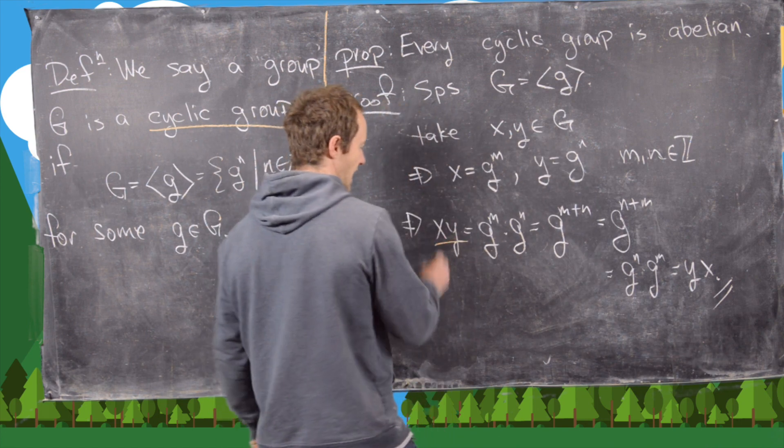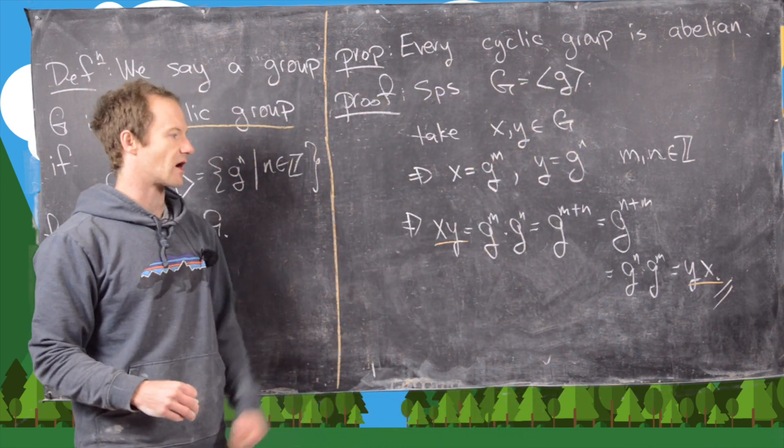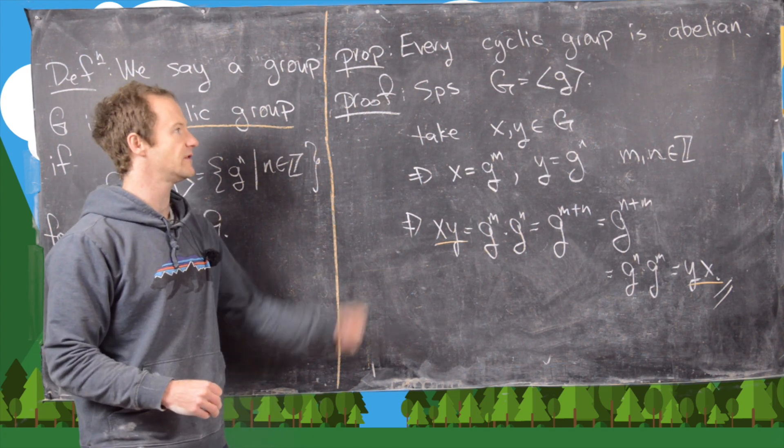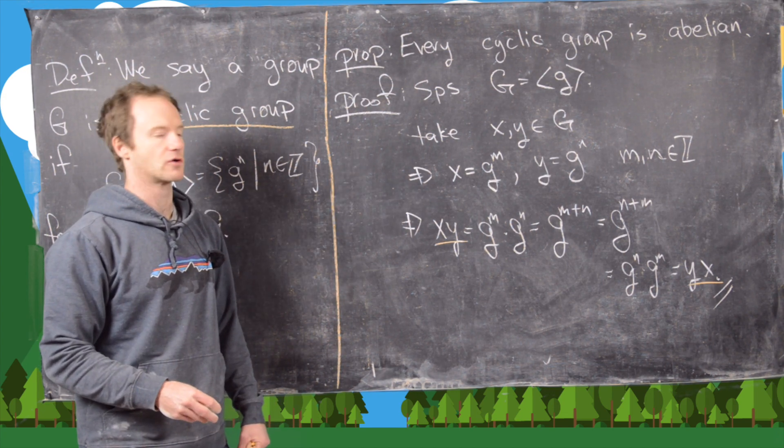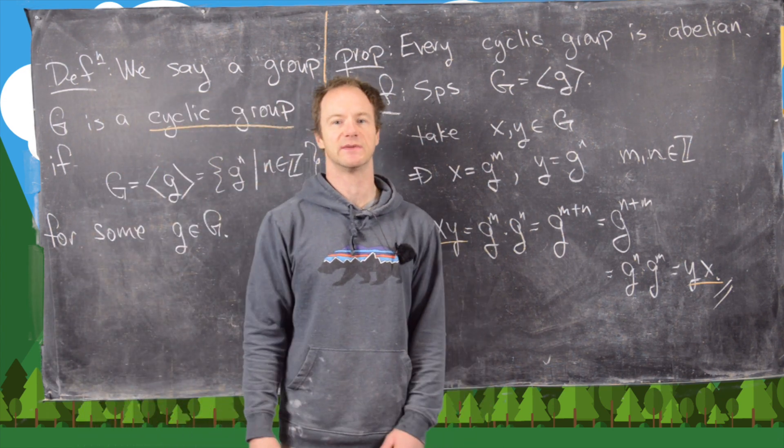So look at what we have: we have x times y equals y times x. In other words, our group operation is commutative, which is exactly what we need to show that our group is abelian. I'll clean up the board and we'll look at some examples.